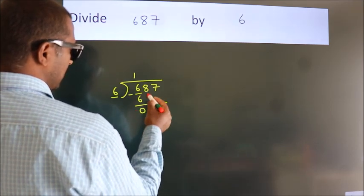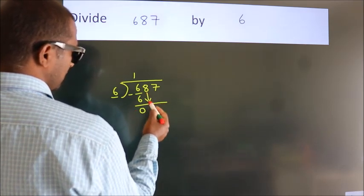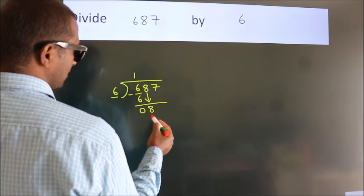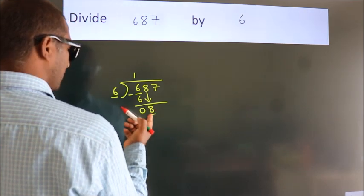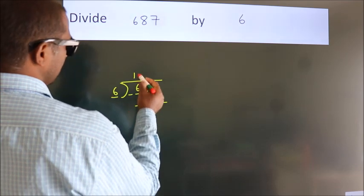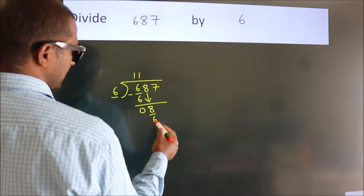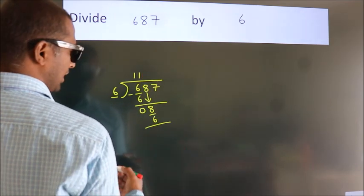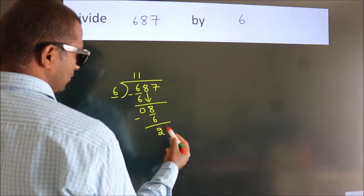After this, bring down the next number. So 8 down. So 8. A number close to 8 in the 6 table is 6 once, 6. Now we subtract. We get 2.